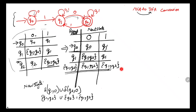Whenever we draw a transition table we have to denote the initial and final states. q0 is already the initial state. For the final state: in the given NFA, q2 is the final state. We look at the present state column and all states which contain q2 as a member are considered final states. q0 doesn't include q2; q1 doesn't include q2; but {q1, q2} does contain q2, so we consider it the final state.